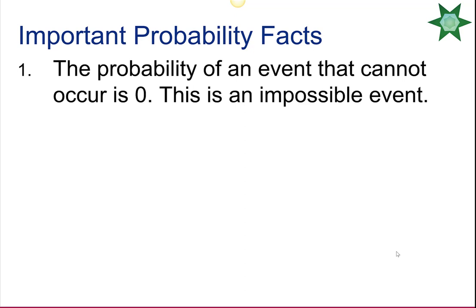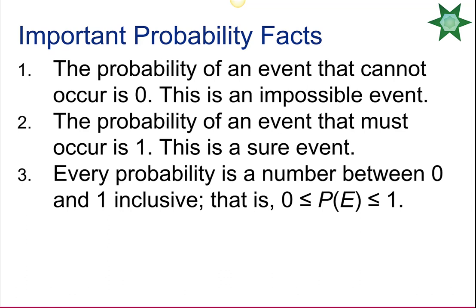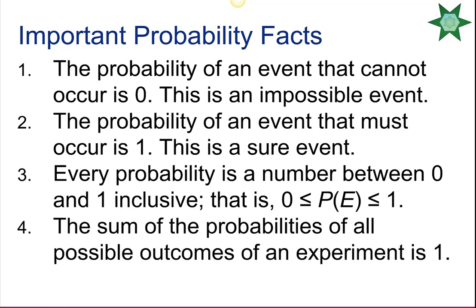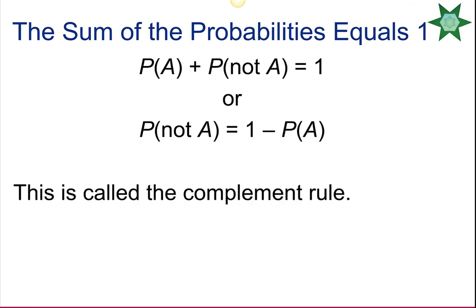Important probability facts: the probability of an event that cannot occur is 0 (called impossible); the probability of an event that must occur is 1 (called a sure or certain event); every probability is between 0 and 1; and the sum of the probabilities of all possible outcomes must equal 1. This leads to the complement rule: the probability that A does not occur equals 1 minus the probability of A, similar to complements in our unit on sets.